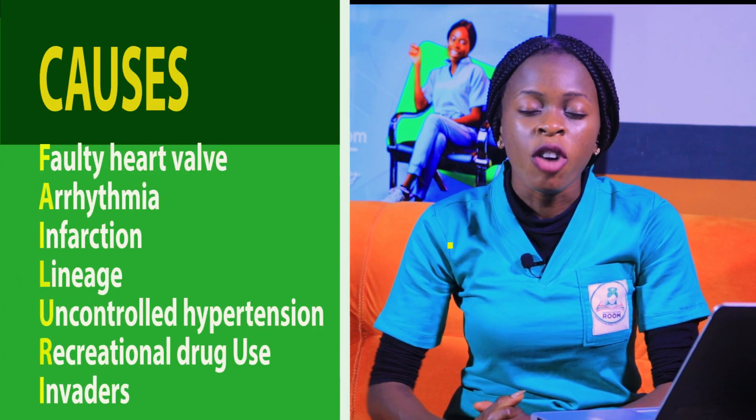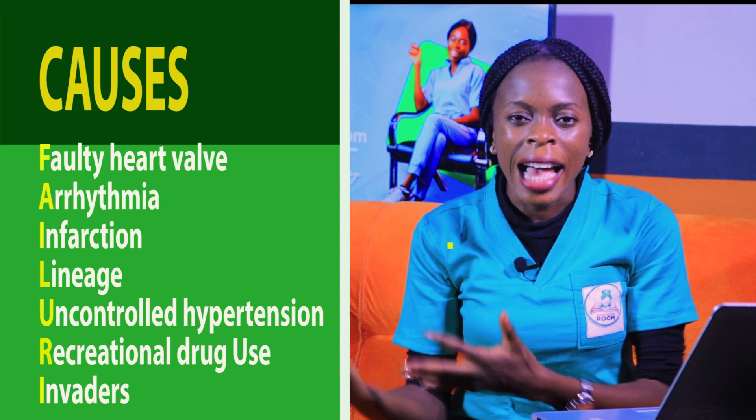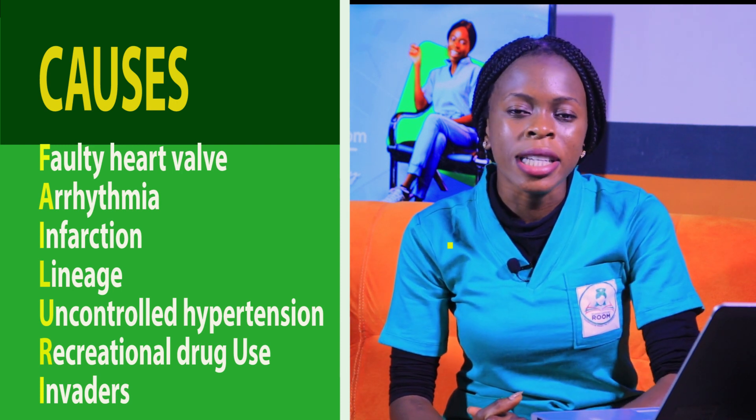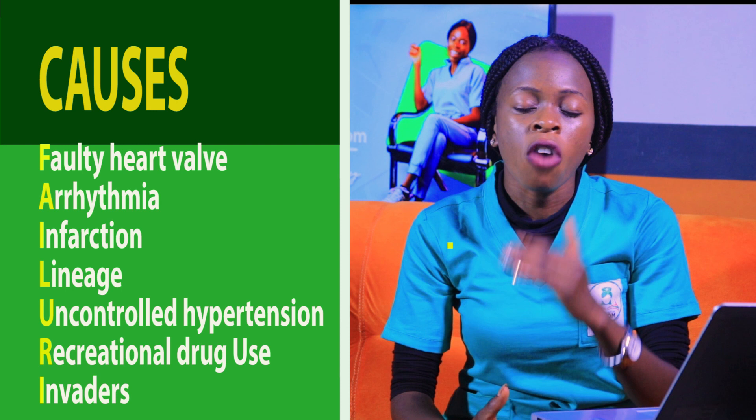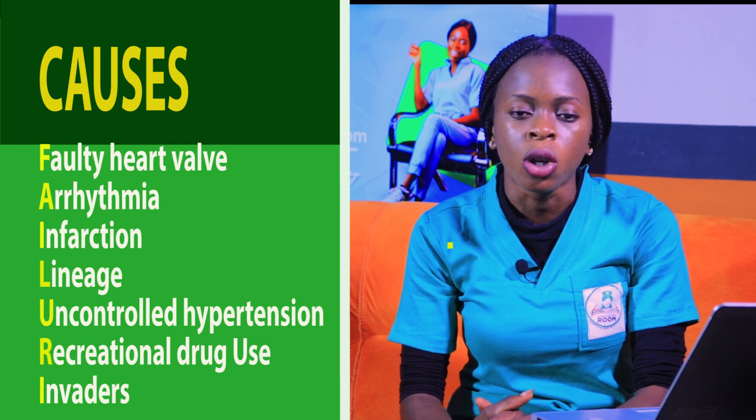L in FAILURE is lineage — hereditary factors. If your grandparents, parents, or grandparents had heart failure, you as an individual are predisposed and at risk of going down with heart failure. U is uncontrolled hypertension. Hypertension is an increase in blood pressure above 140/90 mmHg mercury. When that continues for a long period of time, not properly managed, it can result in heart failure.